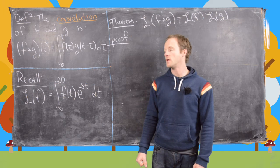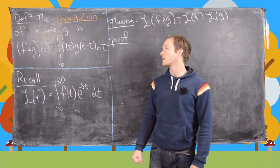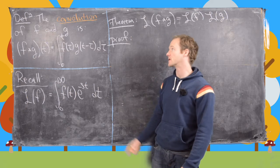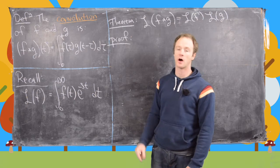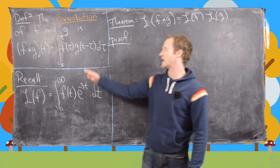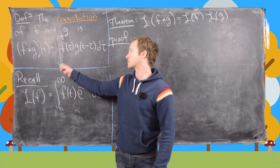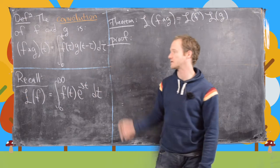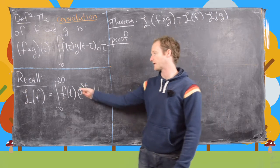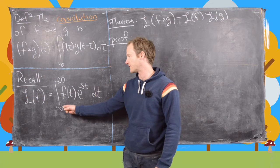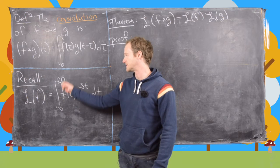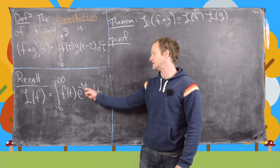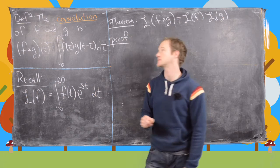In this video we're going to look at how the convolution of two functions and the Laplace transform interact with each other. Let's recall that the convolution of f and g is defined via the integral from zero to t of f of tau times g of t minus tau d tau. The Laplace transform of a function is given by the integral from zero to infinity of f of t e to the minus st dt, which gives us a function of s.